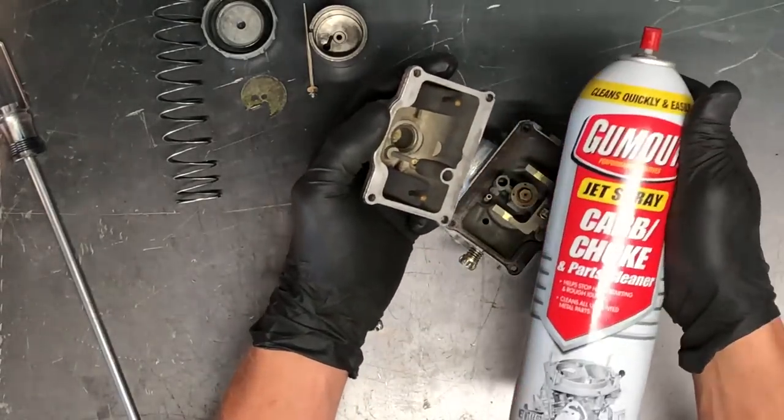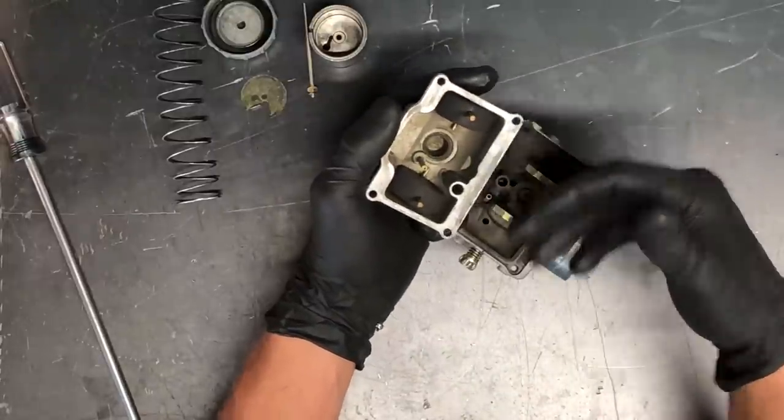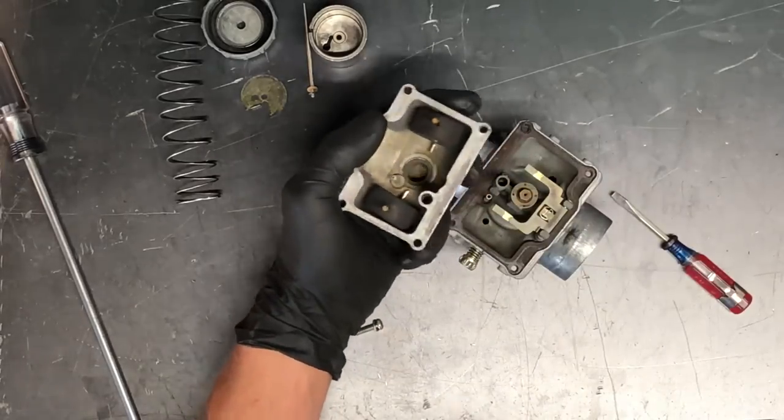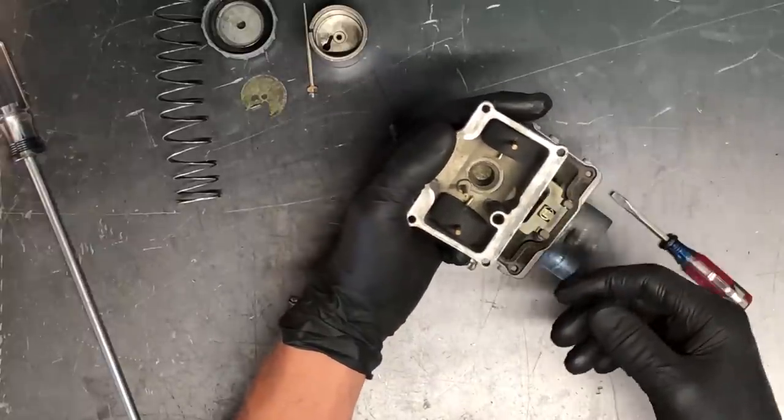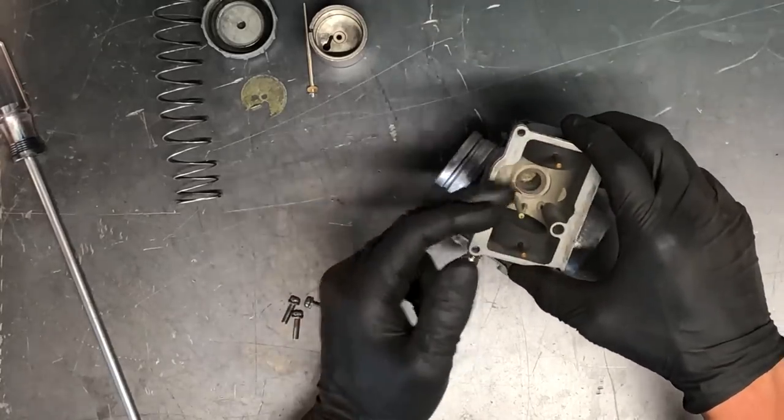Spray it with carb and choke cleaner. I prefer the Gum Out brand and it cleans up really well. Spray it with compressed air and the bowl is clean. If you need to soak it in some fuel or some carb and choke cleaner overnight or for a couple hours, that a lot of times will do a good job as well.